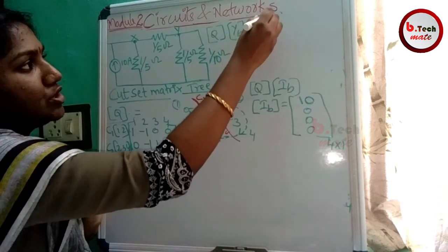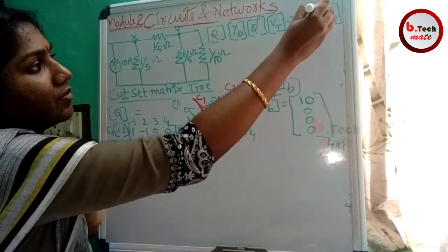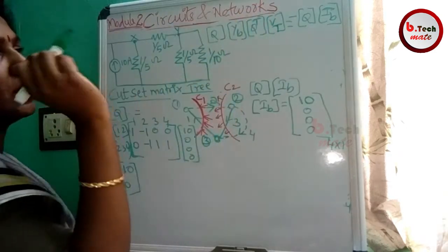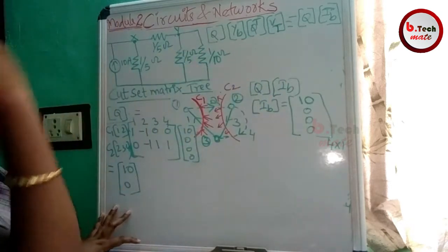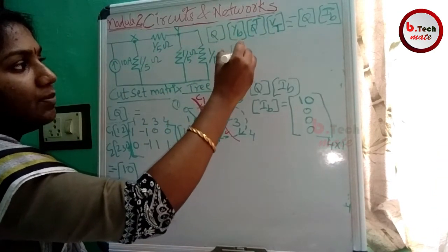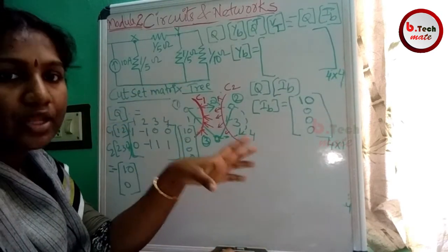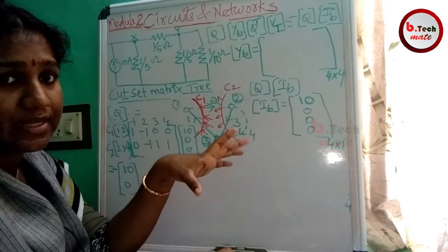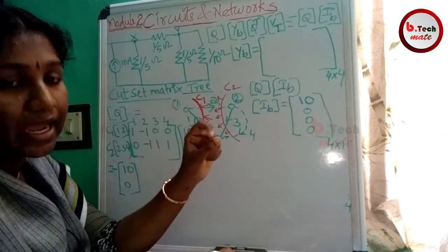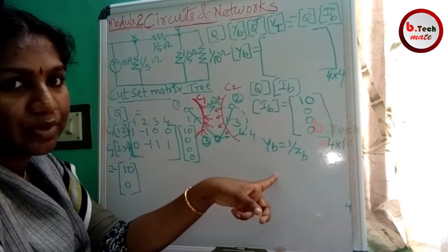The node admittance equation is: Q·Yb·Q^T·Vt equals minus Q·Yb·Xb. Here Yb is the admittance matrix, which is a symmetric diagonal matrix. We have 4 branches giving 4 rows and 4 columns. If we use Zb, admittance Yb equals 1 by Zb — resistance is the reciprocal of admittance.